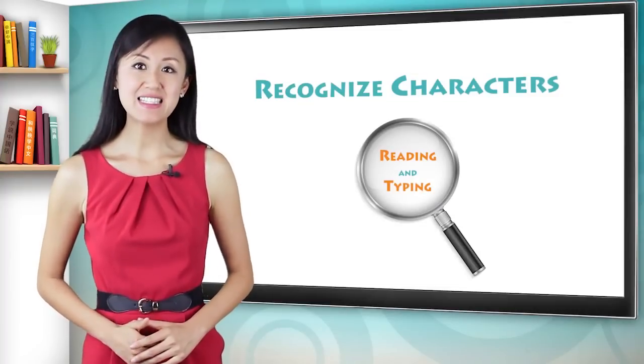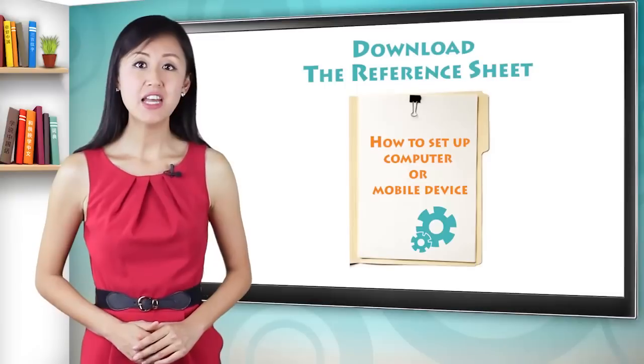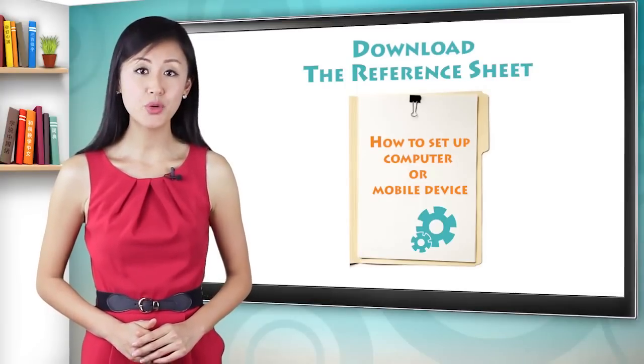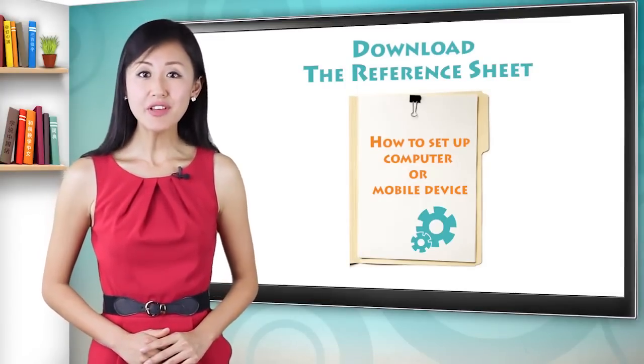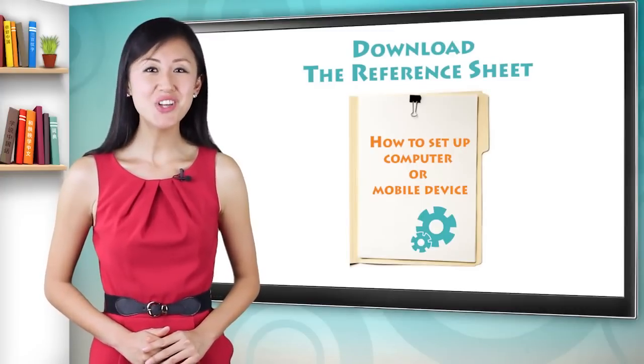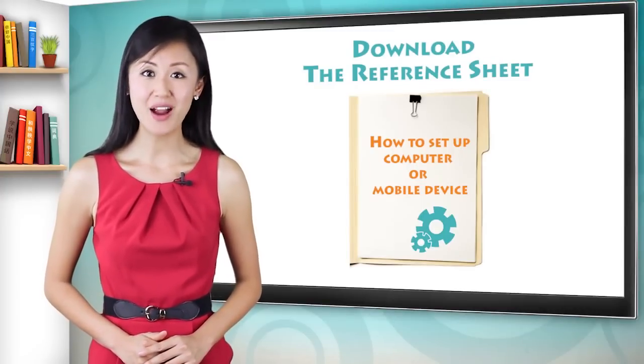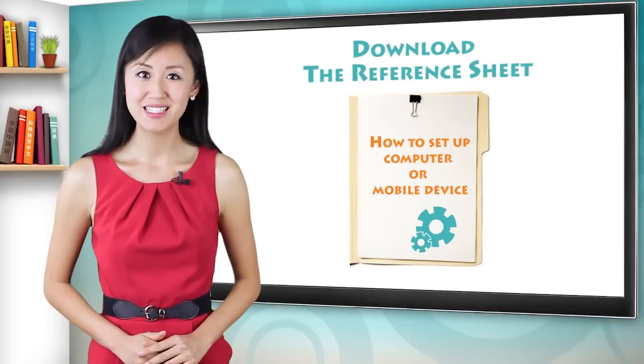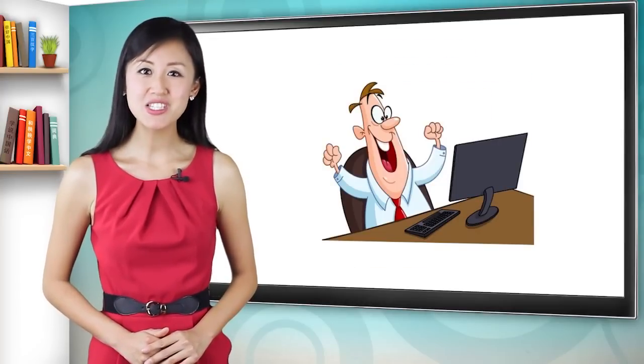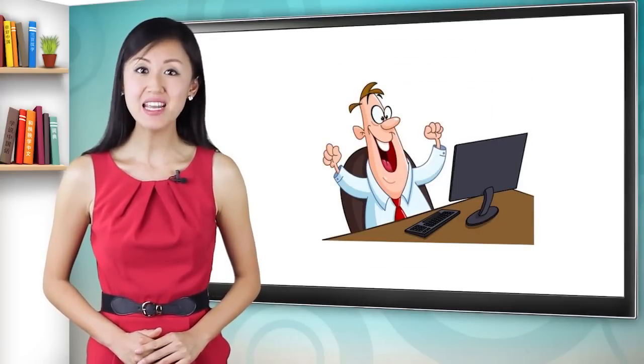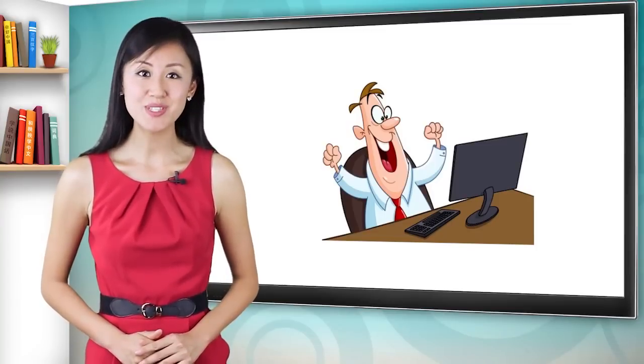Your homework for this lesson is to download the reference sheet that shows you how to set up your computer or mobile device for inputting Chinese. If the thought of configuring a computer or device scares you, don't worry, it's a really simple process and we'll guide you through it. Once you've got that set up, you'll almost be ready to start reading and typing many of the things that you already know how to say in Chinese.